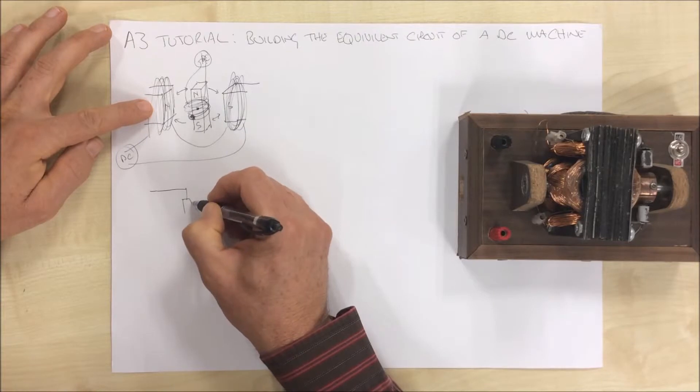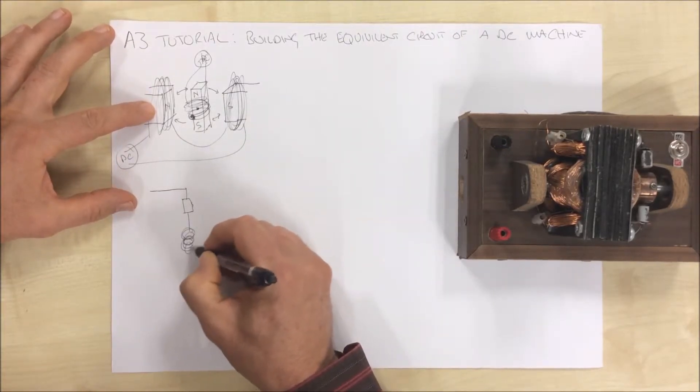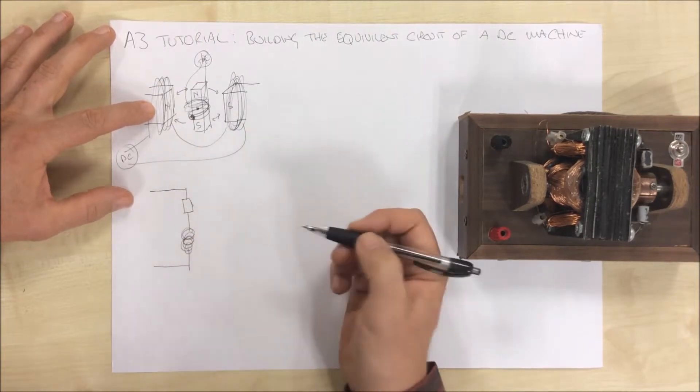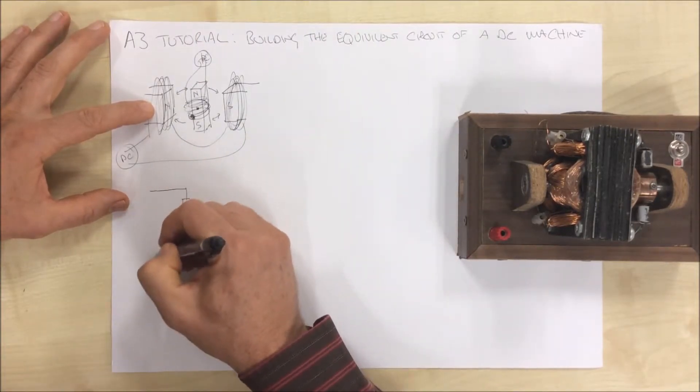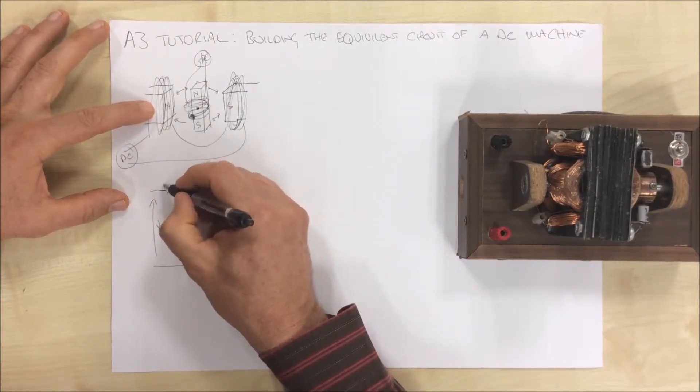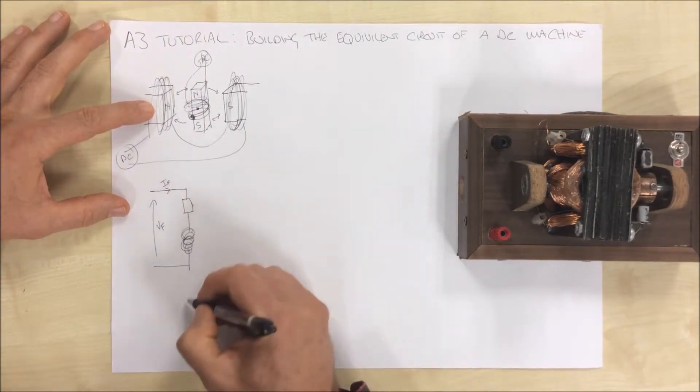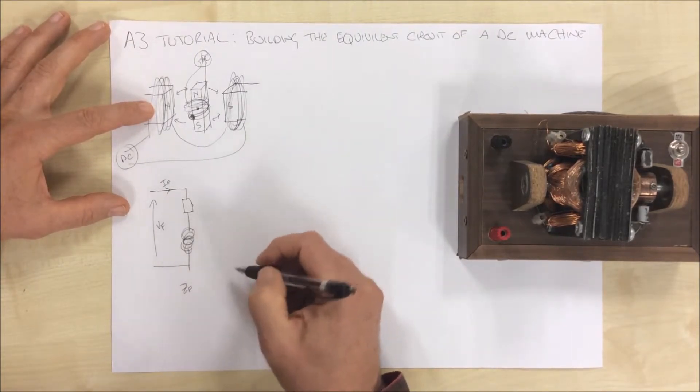We know wire has a resistance. And being a coil, it has an inductance. So that is our field. This is supplied with our field voltage. A current will be drawn through here, our field current, through the impedance of our field.